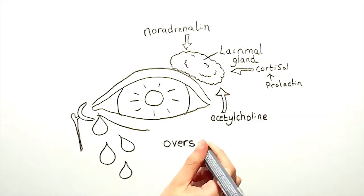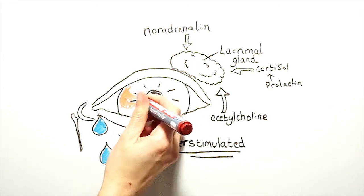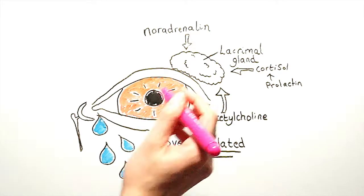Acetylcholine and noradrenaline in particular are very potent stimulants for the lacrimal gland, and all of these neurotransmitters and hormones which stimulate tear production are being produced in large quantities at a time of heightened emotion.